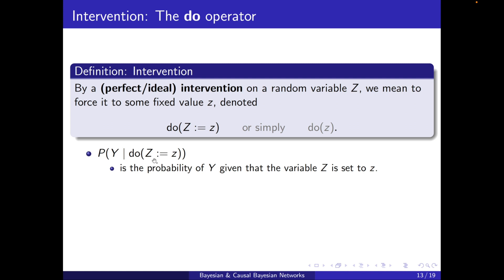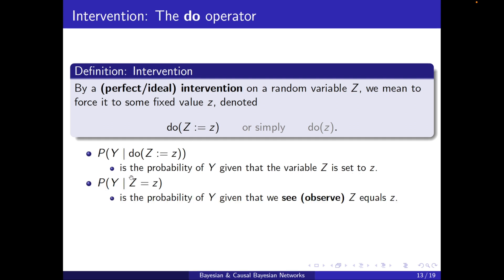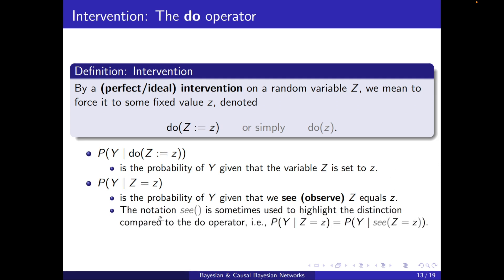So P(Y | do(Z = z)) is the probability of Y given that the variable Z is set to z. Compare this with P(Y | Z = z), which we used in all previous chapters — this is the probability of Y given that we observe Z equals z. Note the difference. The notation 'C' is sometimes used to highlight that distinction; for example, P(Y | C(Z = z)) is the same as P(Y | Z = z), indicating pure observation.